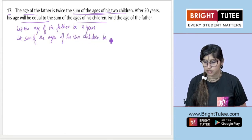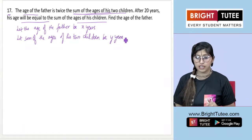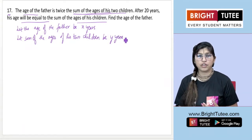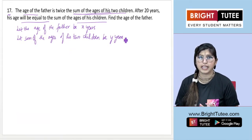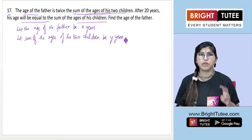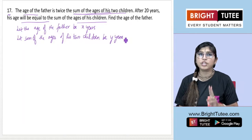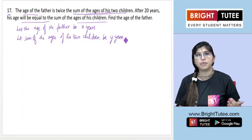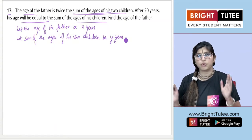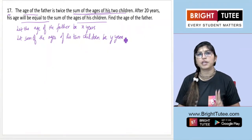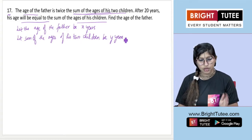Students generally make the mistake of taking the age of one child as y and the age of another child as z. But since we only have a pair of linear equations in two variables, we'll go ahead with only two variables. We didn't yet learn how to solve with three variables, so we'll convert everything into two variables.